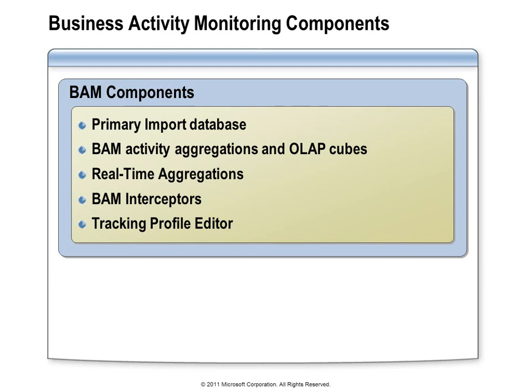There are pre-built BAM interceptors that know how to collect data from pipelines and orchestrations. You can use a tool called the Tracking Profile Editor to configure those interceptors to collect specific data values at specific points in the business process. There are also two other interceptors — one that can be configured to collect data from a Windows Workflow application, and another for collecting data from a WCF service. Understanding this set of components gives you enough information to start applying BAM to your applications.